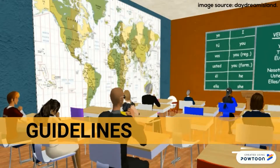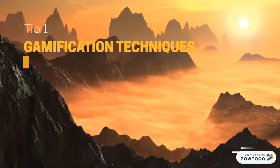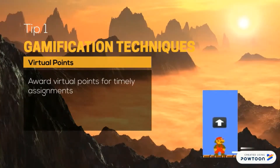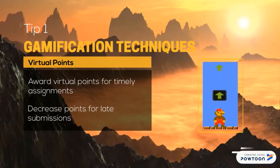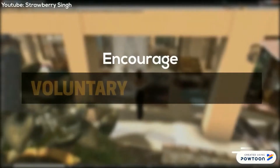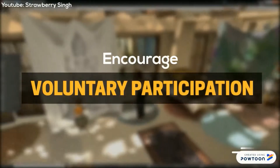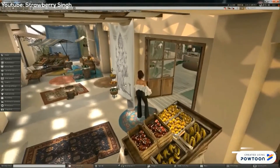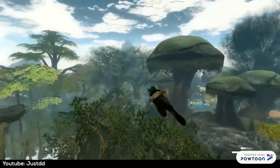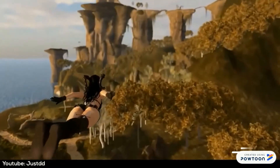Here are some guidelines for teaching in a virtual world. Award virtual points when activities are done correctly, and decrease points when students fail to meet requirements. Encourage voluntary participation from students, whereby lecturers facilitate and students explore the virtual environment on their own. Building in this freedom can motivate students to view the work itself as a reward.